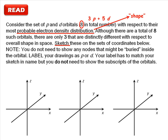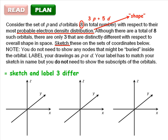Once you've read the problem and each sentence makes sense to you, you need to plan your answer. One way of doing that is to just state as concisely as you can what it is you have to do. In this case, the question can be summarized as sketch and label 3 different shapes of p and d orbitals.